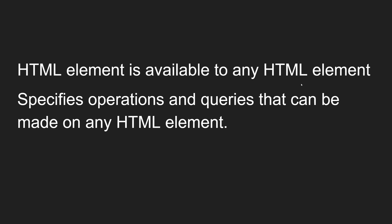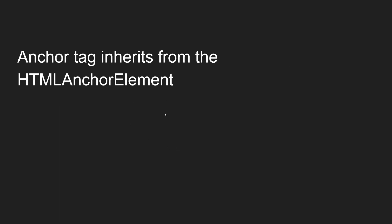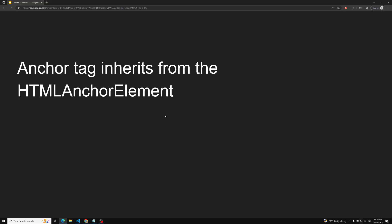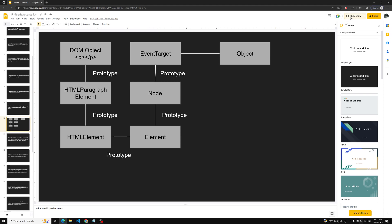Element traversal includes things like nextElementSibling, children, and querySelector. The next level is HTMLElement, which is available to any HTML element — for example, text nodes or comment nodes would not have HTMLElement present. Finally, the HTMLParagraphElement is the unique object for the paragraph tag. Remember, each tag has its own unique object — for example, an anchor tag has HTMLAnchorElement, and each tag inherits from its own unique element object.